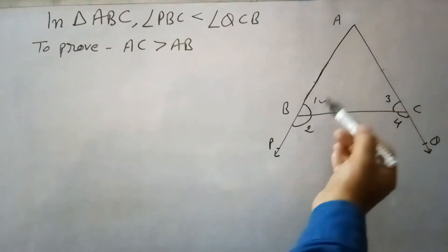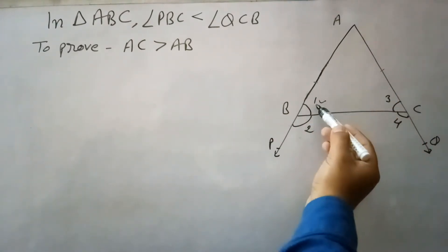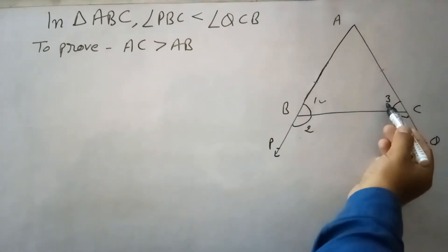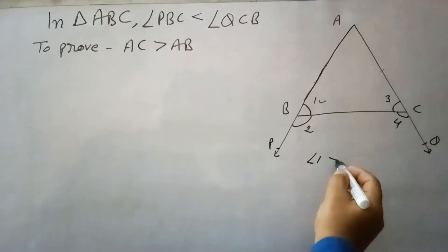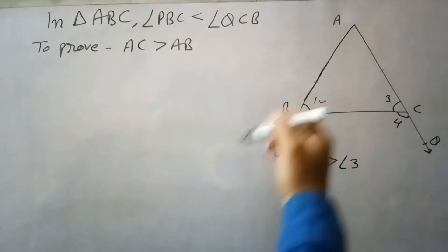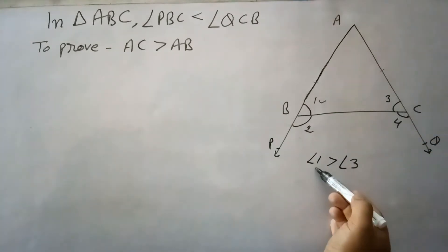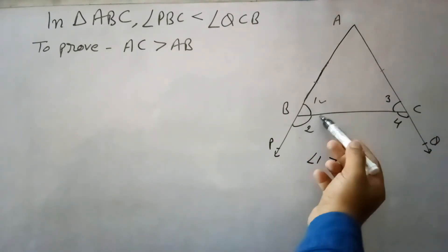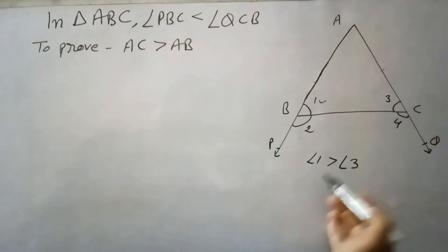If we prove by any way that angle 1 is greater than angle 3, then we can say that AC is greater than AB, because the side opposite to the greater angle will be greater. So this way we can prove the result. Let me write the solution now.